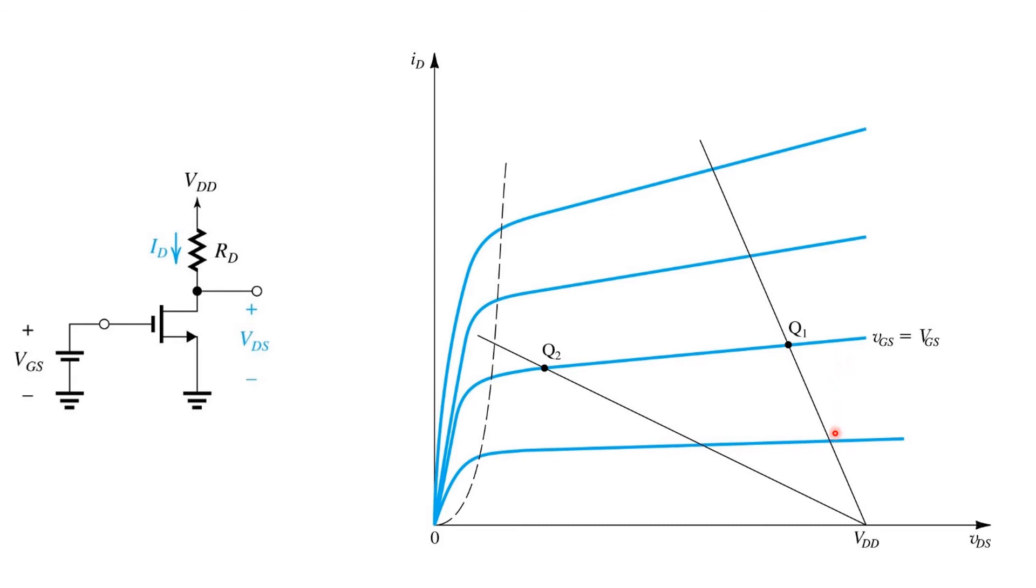and selecting the slope of the load line by selecting RD. Remember that the slope here is negative 1 over RD.